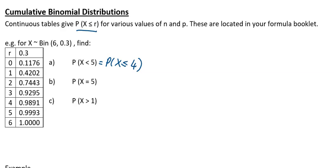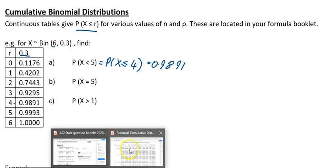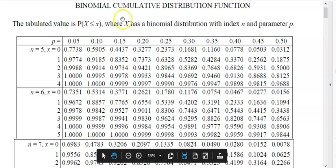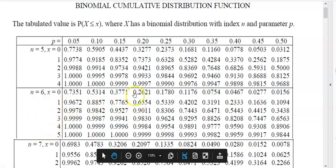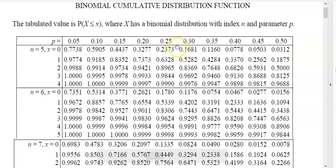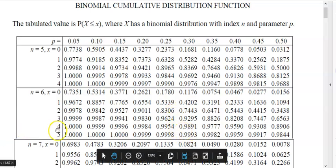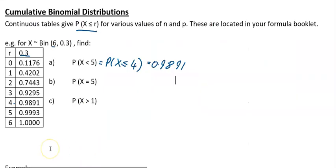On your tables, go to the section where n equals 6, go across to the probability column of 0.3, then go down to r equals 4, which gives 0.9891. Here in the formula booklet — the binomial cumulative distribution function table — with n equals 6, p equals 0.3, and r equals 4, you can see the value is 0.9891.